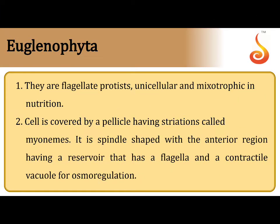In this video, I wanted to say something more about myonemes and also the pellicle in Euglena. This group of protists called Euglenoids does not have a cell wall. In contrast to chrysophytes and dinoflagellates which have cell walls, Euglenoids or Euglenophyta does not have a cell wall.